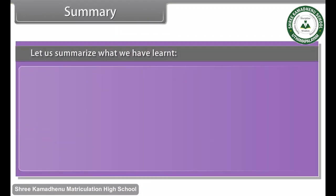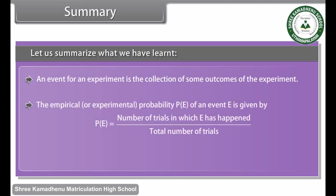Summary. Let us summarize what we have learnt. An event for an experiment is the collection of some outcomes of the experiment. The empirical or experimental probability P(E) of an event E is given by P(E) equals number of trials in which E has happened upon total number of trials. The sum of all the probabilities is 1.